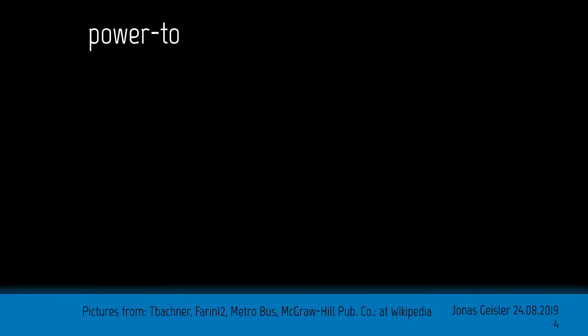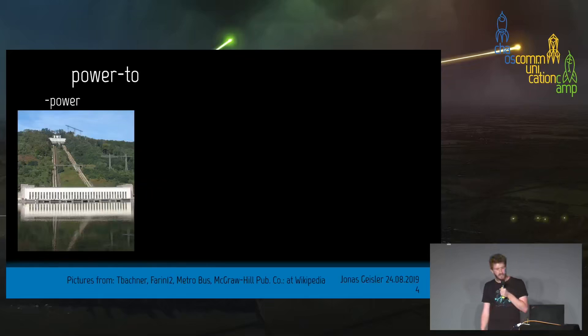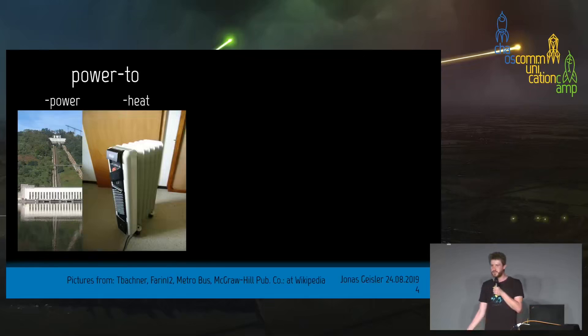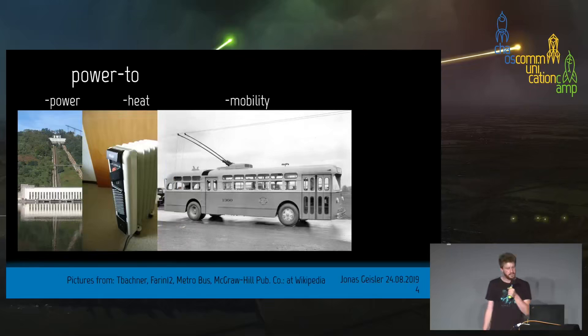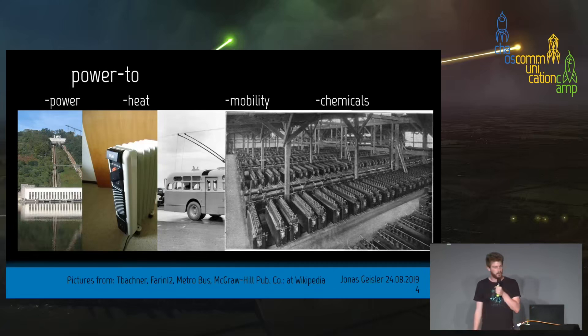Now, is that new? And I would say no, that's just like modern buzz wording. Because power to power, we have since a long time, this is a hydropump station from the 30s. Power to heat, you might know such devices from your grandparents. Power to mobility, this is a bus from the 40s. And power to chemicals, this is a chloralkali electrolyzer. So, producing chlorine gas and sodium hydroxide solution from the 1920s. So, we have power to whatever already. The thing is just in times of climate change and an increasing amount of renewable energy, it becomes more interesting and new technologies could be implemented.